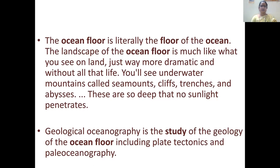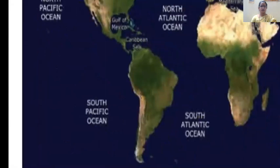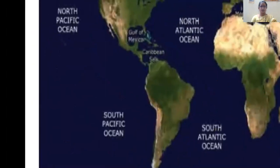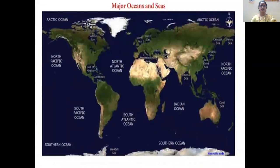If you observe this world map clearly, you can see the major oceans and seas. On the right and left side of the world map you see the North Pacific Ocean. The Pacific Ocean appears twice on this flat map because the earth is spheroid in shape. The Pacific Ocean is the largest and the deepest ocean in the world.